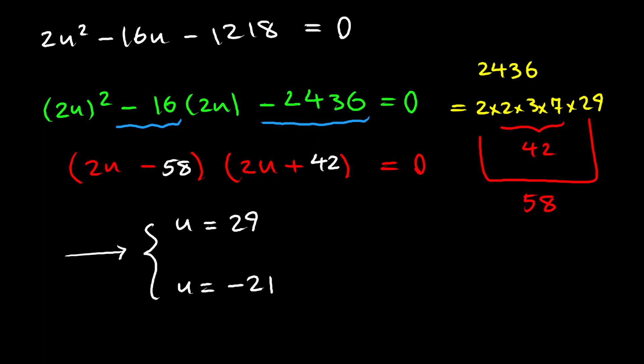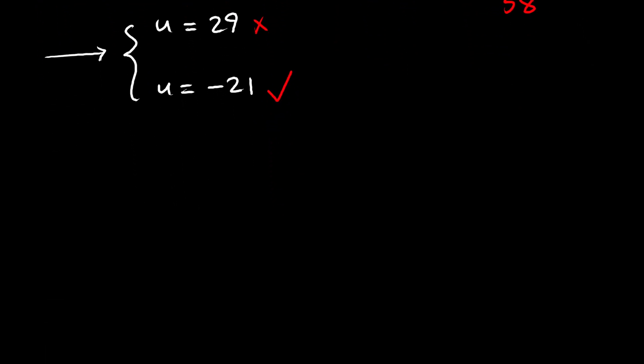But one of these two solutions is not valid. This is not valid, but this one is. And I will explain why this is the case. So, we know that u is x times y. So, let's say x plus y is 2. We know that. And x times y is 29.